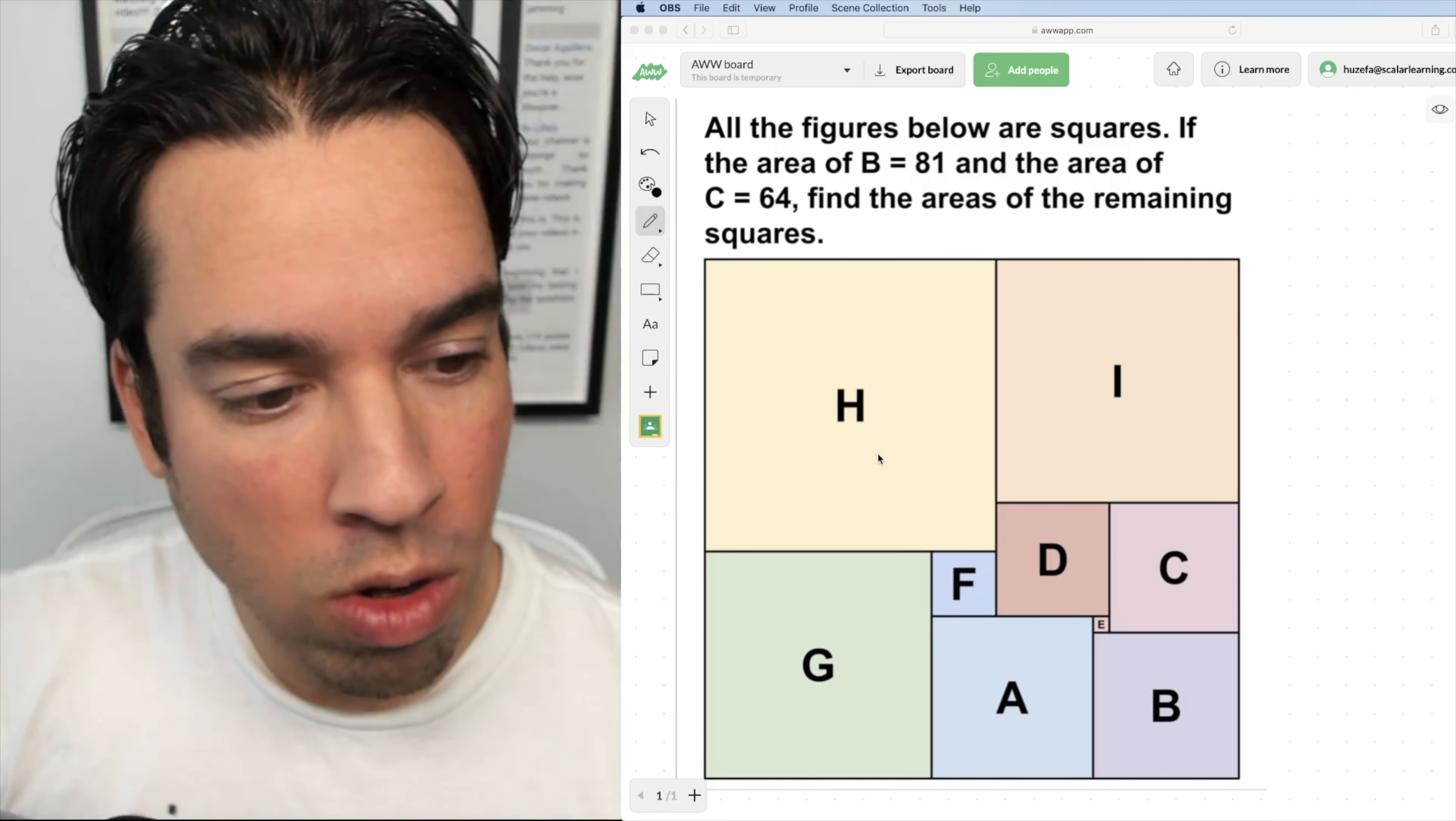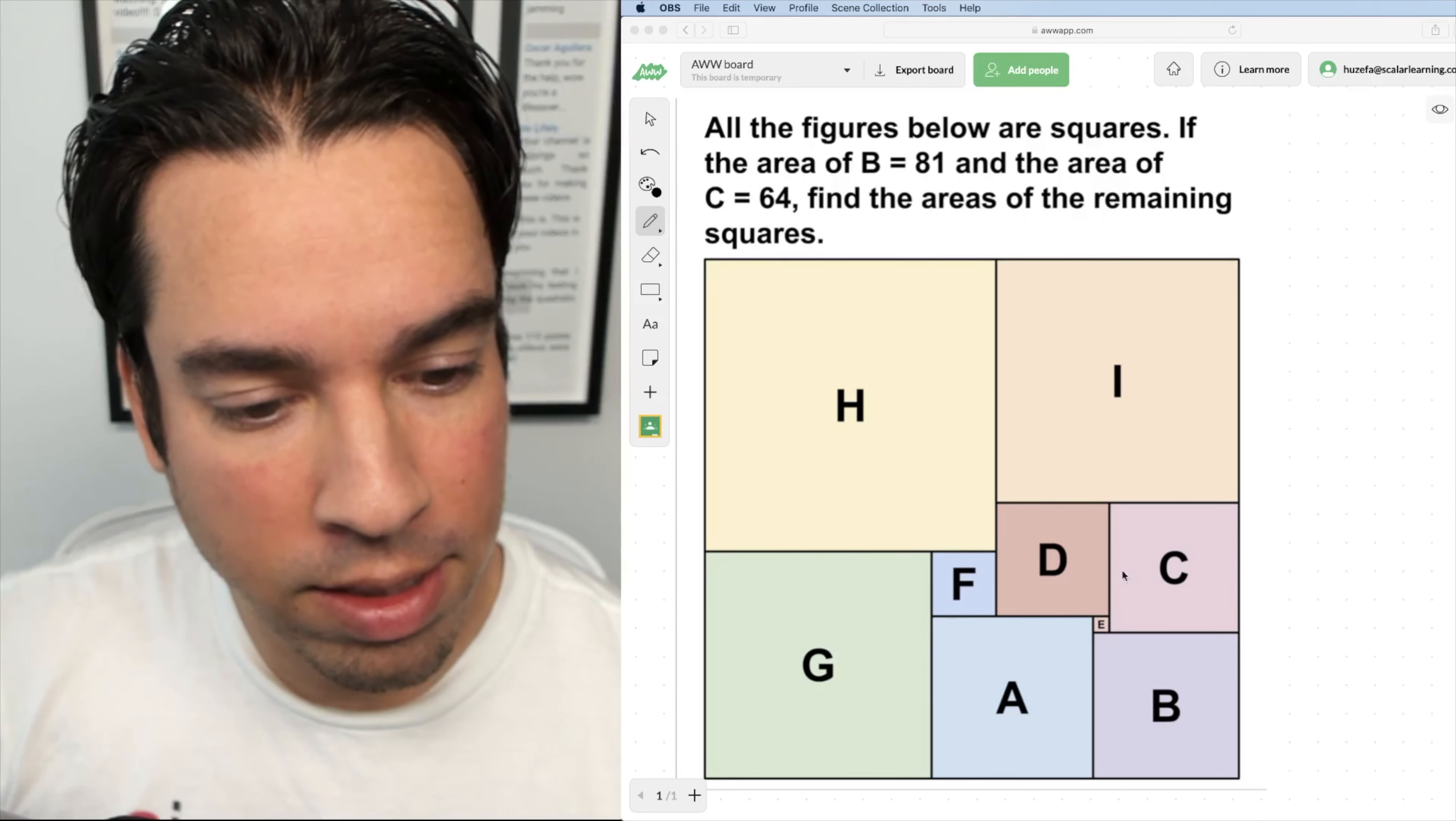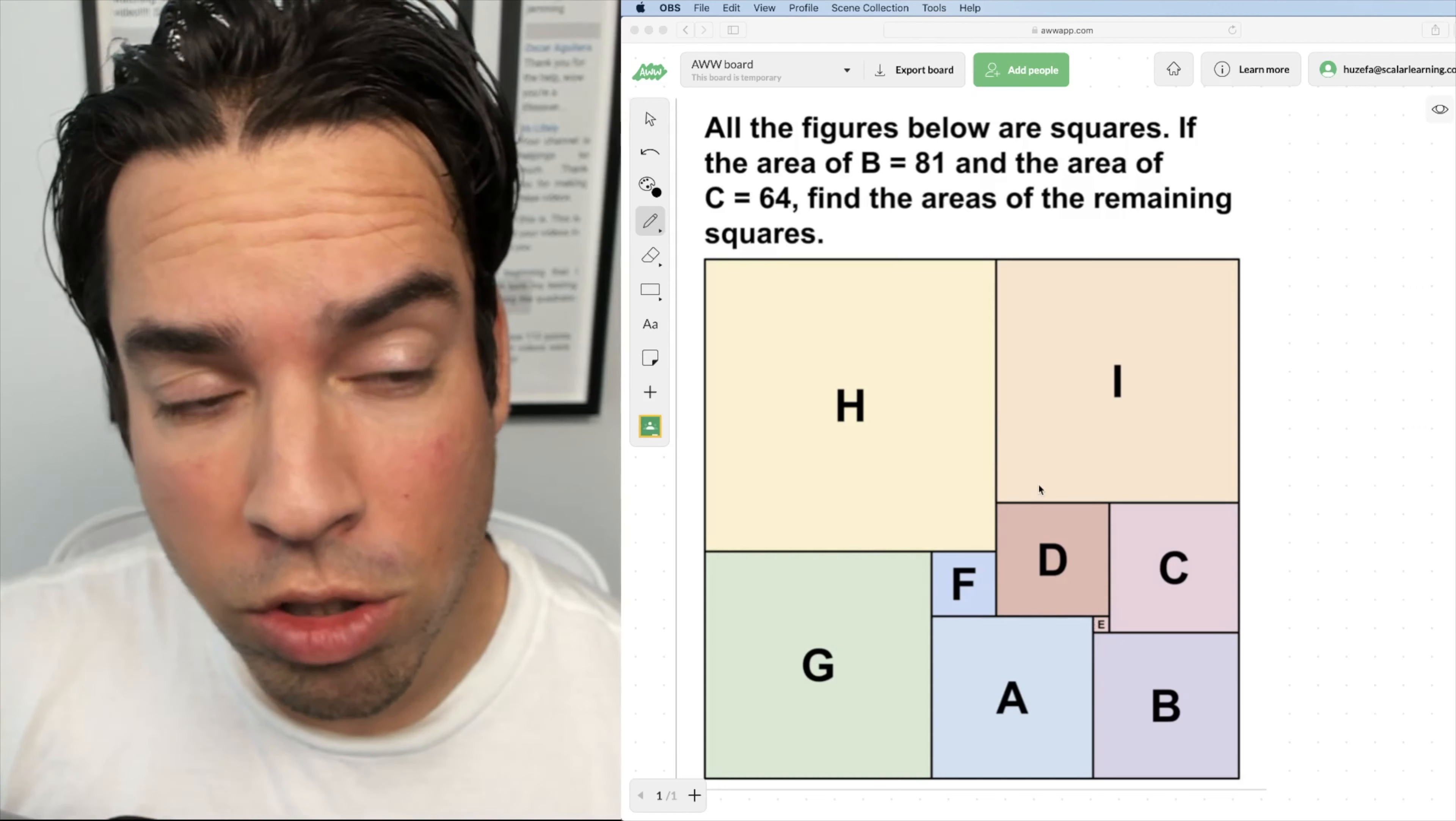So in this diagram, all of these colored shapes, A, B, C, D, E, F, G, H, I, they are all squares, okay?